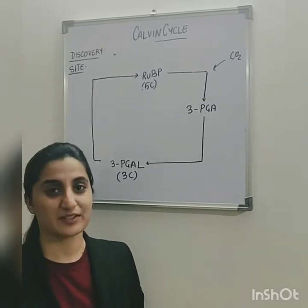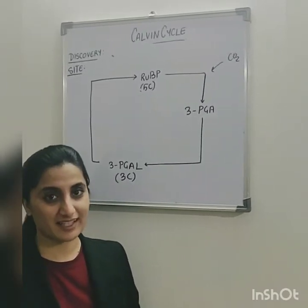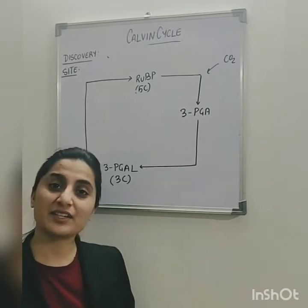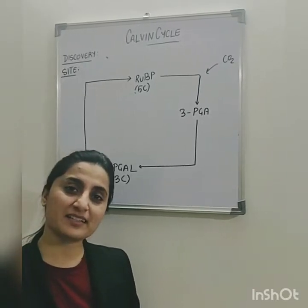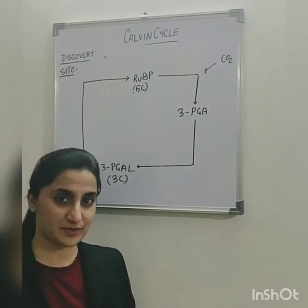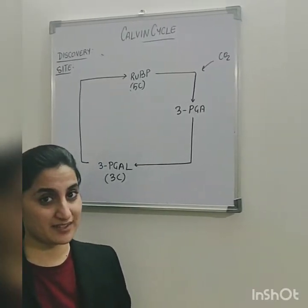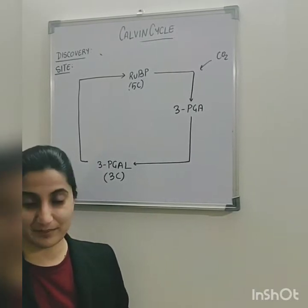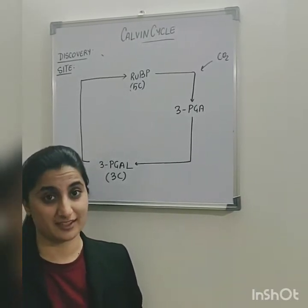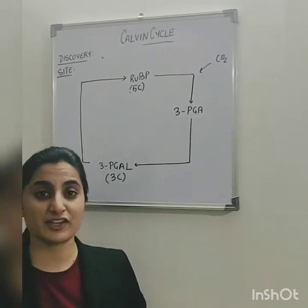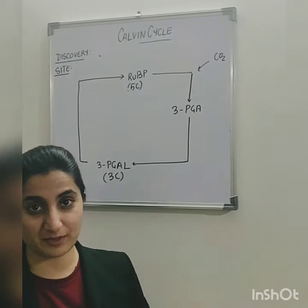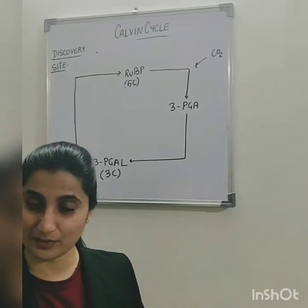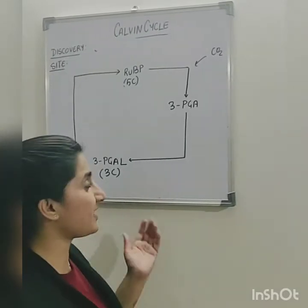Hello students, today the botany class is all about the Calvin cycle. As you have learned from the previous classes on photosynthesis, light reactions take place in order to make assimilatory powers. We have learned that the assimilatory powers from the light reaction are going to be utilized in the Calvin cycle, which is the topic of discussion today.